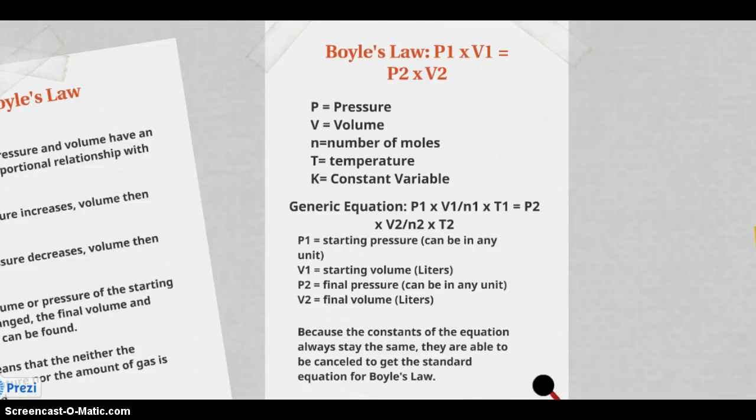The generic equation for gas laws is P1 times V1 over N1 times T1 equals P2 times V2 over N2 times T2. P1 is the starting pressure and can be in any unit. V1 is the starting volume and has to be in liters. P2 is the final pressure, which can be in any unit, and V2 is the final volume and has to be in liters.